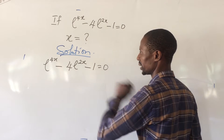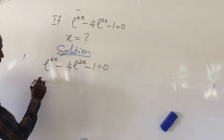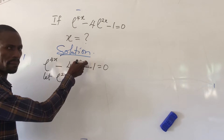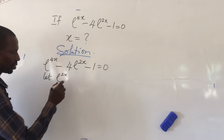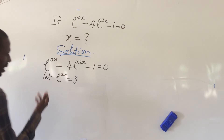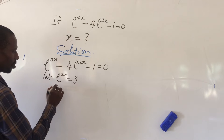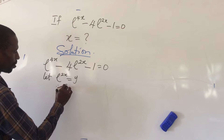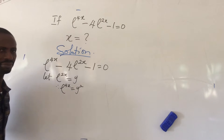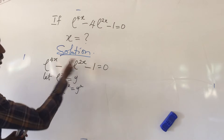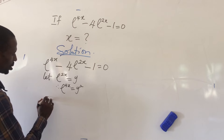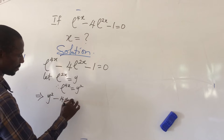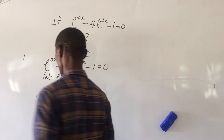If you look critically, this is e to the power of 4x and this is e to the power of 2x. What if we let e to the power of 2x — the term having the minimal power — what if we let e to the power of 2x equal to y? Then therefore e to the power of 4x will now be equal to y squared. So let's substitute this into the expression, which gives us y squared minus 4y minus 1 equals zero.